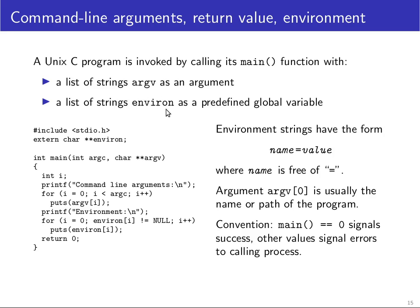There are conventions for both command line arguments and environment variables. Environment strings have the form name=value, where name is the name of an environment variable. This list of strings is interpreted as a list of assignments. You can't have an equal sign in the name of an environment variable — names are usually restricted to letters and underscores — and you can assign an arbitrary string to an environment variable using this equals-sign-separated pair.